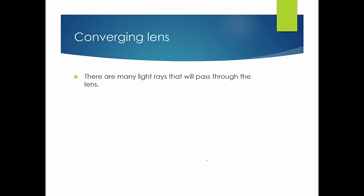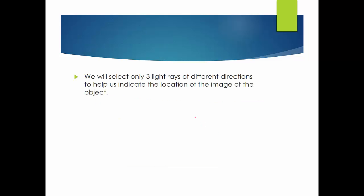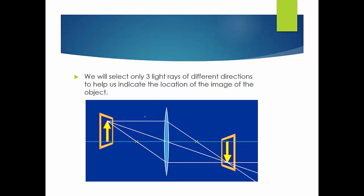There are many light rays that will pass through the lens. They will be refracted by the lens and will converge, for a converging lens, to where the image will be. But we will only select three light rays of different directions to help us locate the position of the image of the object. So these are the three light rays: one, two, and three.